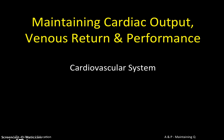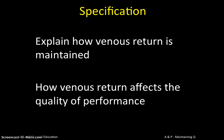Having looked at cardiac dynamics, we're familiar with terms like cardiac output, stroke volume, and heart rate. Now we're going to look at what mechanisms are in place to sustain cardiac output — to enable us to consistently eject a lot of blood around our body when we're exercising — and how that affects our performance. The specification asks you to explain how venous return is maintained and how it can affect performance.